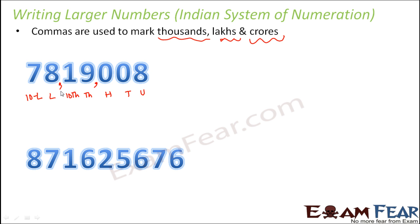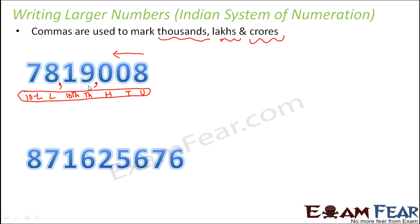This comma will quickly tell us that this represents the thousand part. We put another comma to separate the lakhs. Even just looking at the commas, you will be able to understand which part is thousands and which part is lakhs. So whenever the first comma comes — and when I say first or second, it is always from the right side — the first comma you encounter is for the thousands. Here you see there are two digits for thousands, which means it is 19,000. The next comma is for the lakhs, and here you have 78, so it is 78 lakhs 19,008.